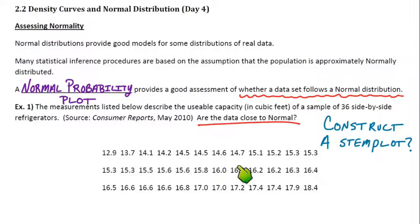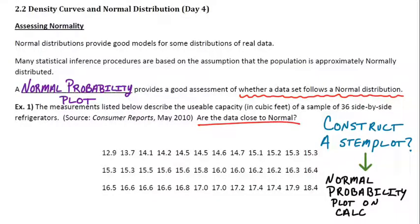If you don't have a calculator, you need to get one. So pause the video, grab a calculator. Because we're not going to construct a stem plot by hand, our objective is a normal probability plot, a normal probability plot on the calculator. That's going to be how we assess whether it's normal or not.